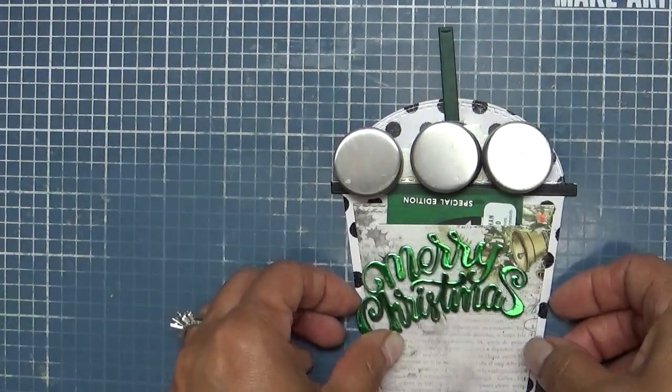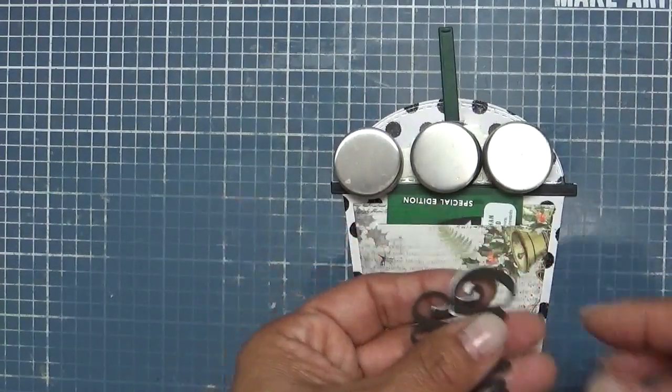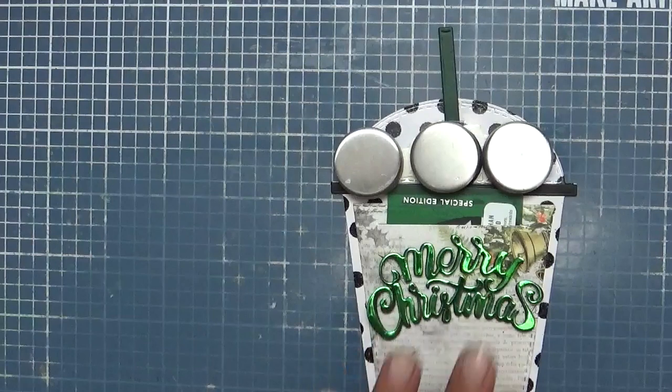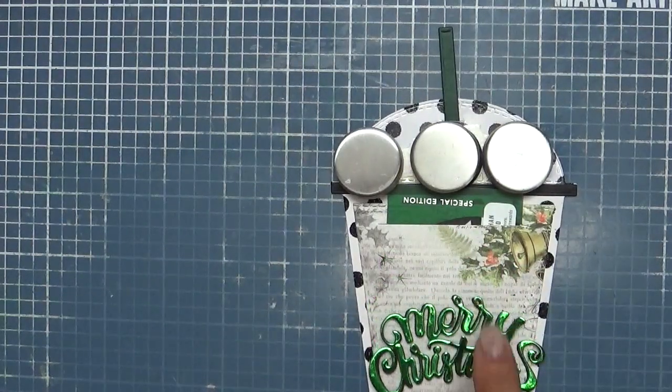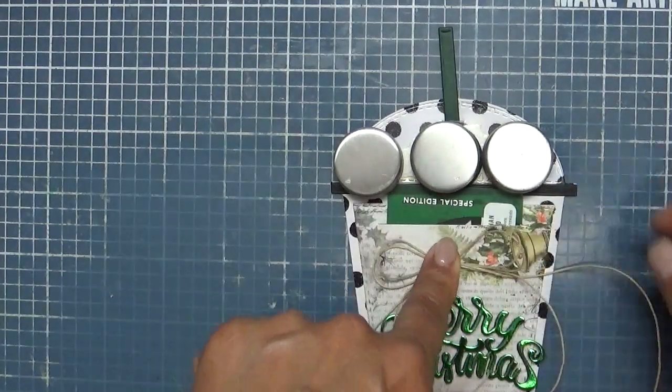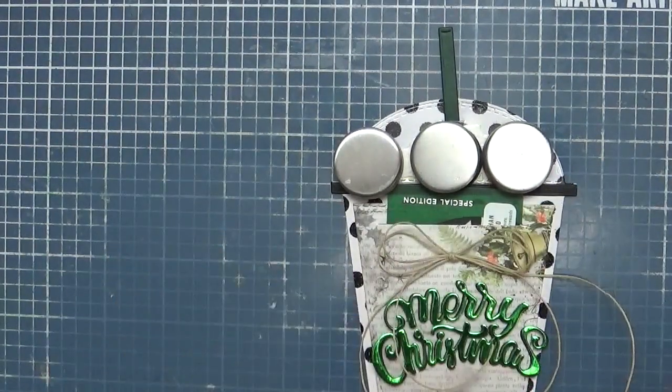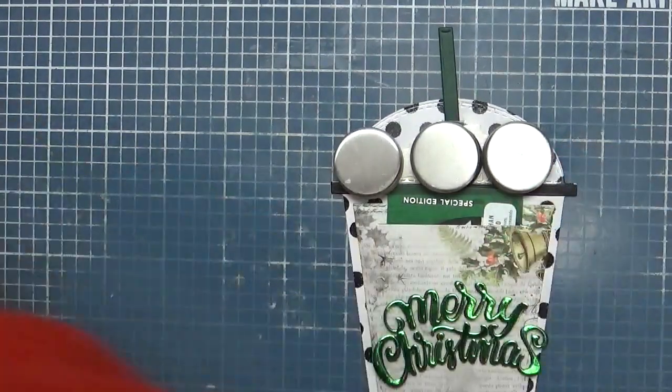I went ahead and I cut this out in some green shiny cardstock and I added some black foam behind it. Let me see, I'm going to put that down there. That's what we're going to do. I'm going to glue this up there and again we're going to use our hot glue gun.